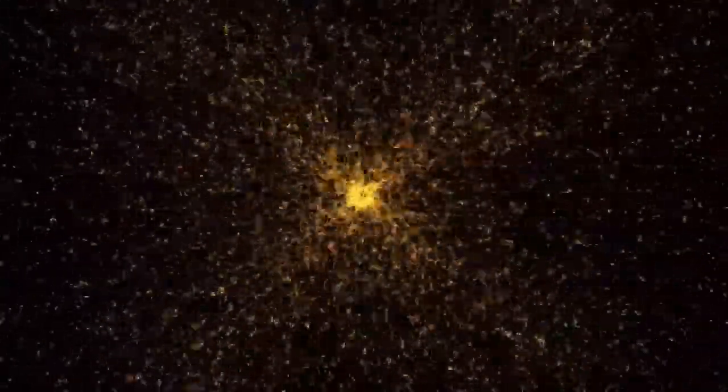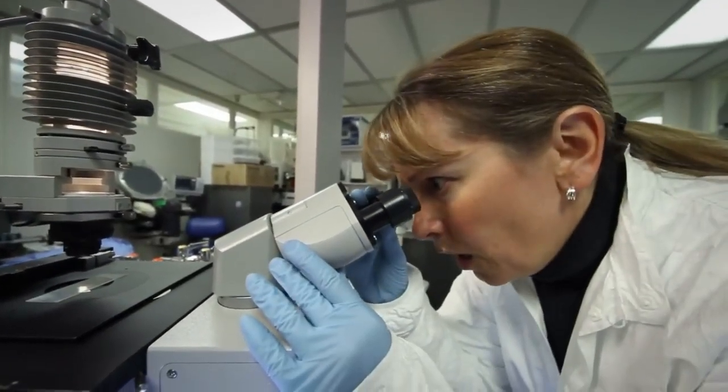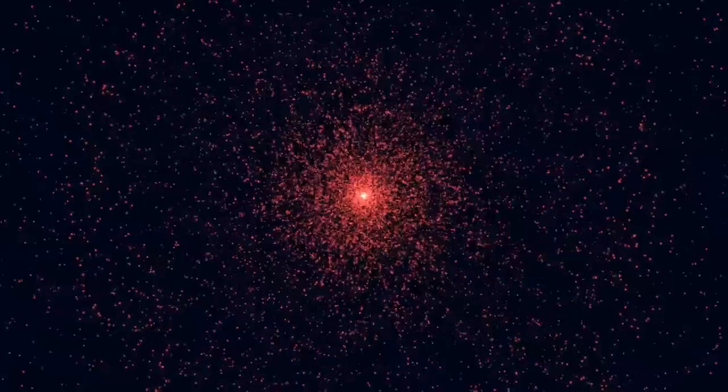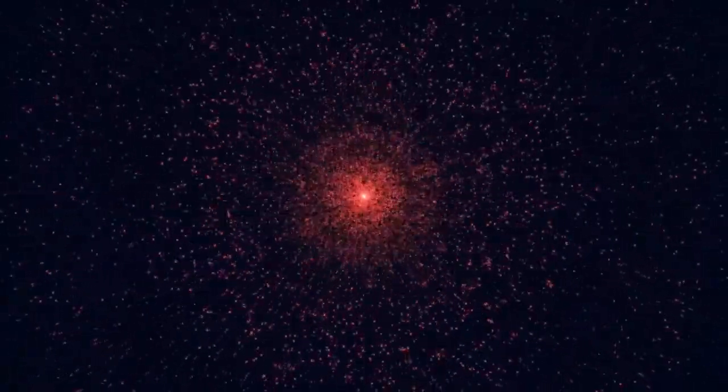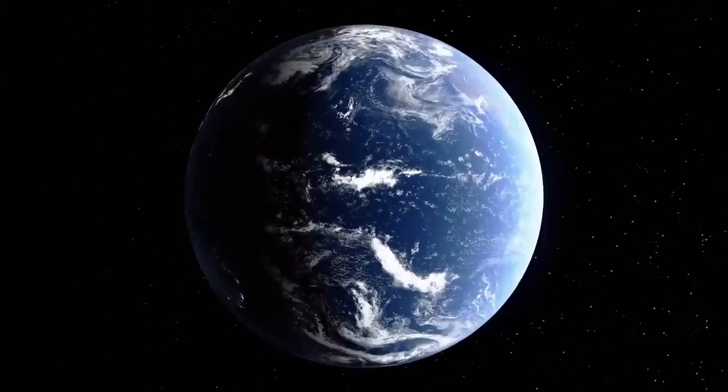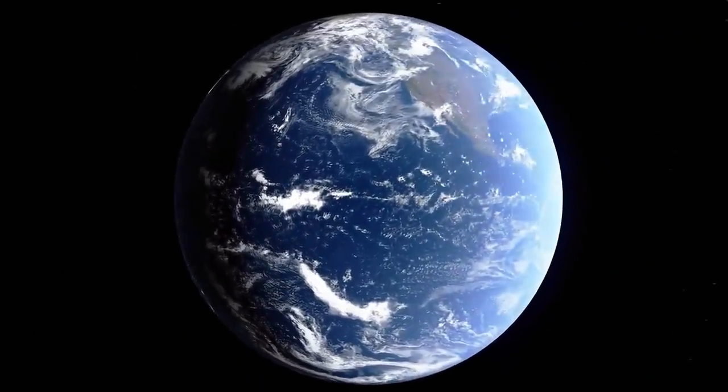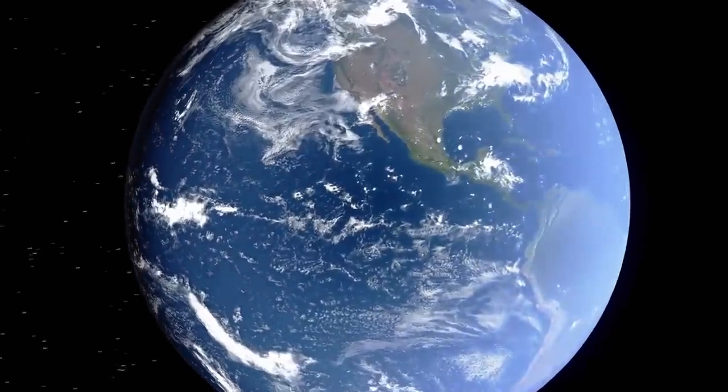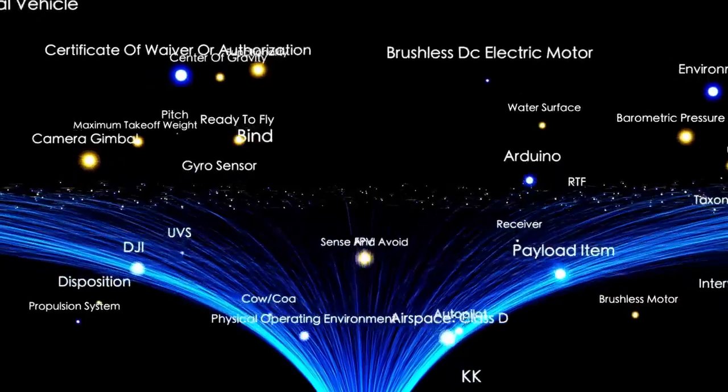Fortunately, Betelgeuse is far enough from Earth that even a powerful supernova wouldn't pose a threat to our planet. But if such an event were to happen closer to home, the results could be devastating. Gamma-ray bursts, sometimes linked with certain supernovae, could strip away Earth's ozone layer, leading to harmful levels of ultraviolet radiation. This could endanger human health, disrupt ecosystems, and negatively impact agriculture. Additionally, the electromagnetic pulse from a nearby explosion could interfere with satellites and electronic systems.